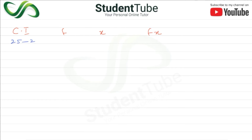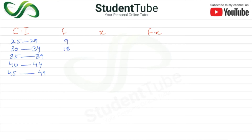The class intervals are: 25–29, 30–34, 35–39, 40–44, 45–49. Frequencies are: 9, 18, 35, 17, and 5. Total Σf = 84.